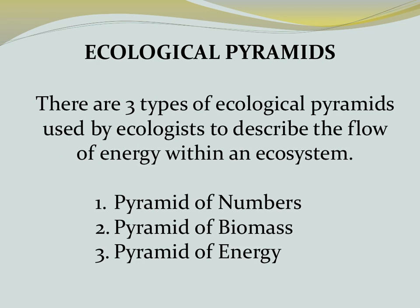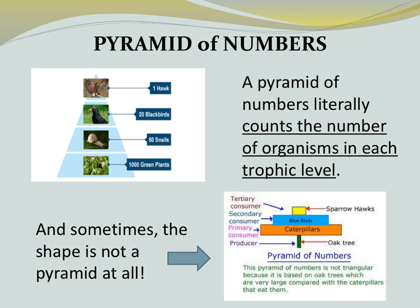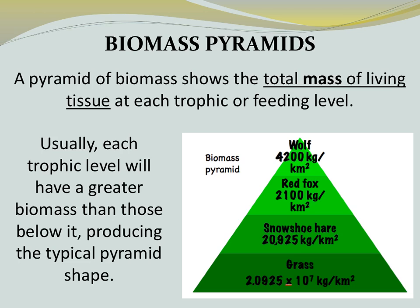Ecologists use three types of ecological pyramids to describe the flow of energy within an ecosystem: a pyramid of numbers, a pyramid of biomass, and a pyramid of energy. A pyramid of numbers literally counts the number of organisms in each trophic level — pause the video and analyze the numbers in this pyramid, as sometimes the shape is not a pyramid at all. A pyramid of biomass shows the total mass of living tissue at each trophic level, and these pyramids depend on the amount of flesh or living material of producers to build the shape.